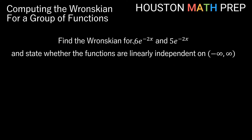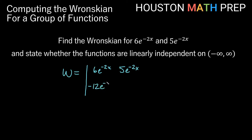Let's look at another example: the Wronskian for 6e^(-2x) and 5e^(-2x). You can see these are constant multiples of one another, so we expect them to not be linearly independent. Our Wronskian is the determinant with first row 6e^(-2x) and 5e^(-2x). The second row derivatives are: -12e^(-2x) and -10e^(-2x). The determinant is computed as main diagonal minus cross diagonal.